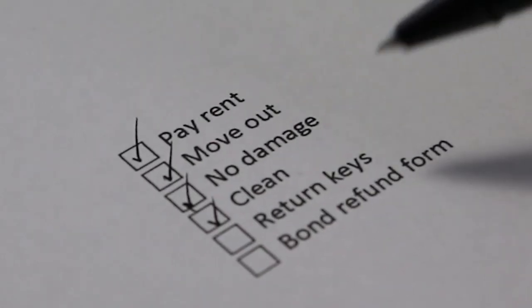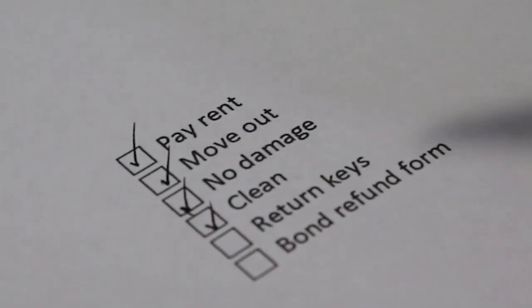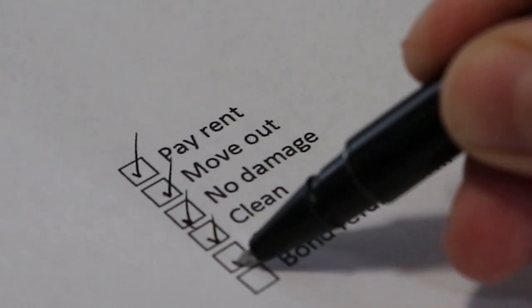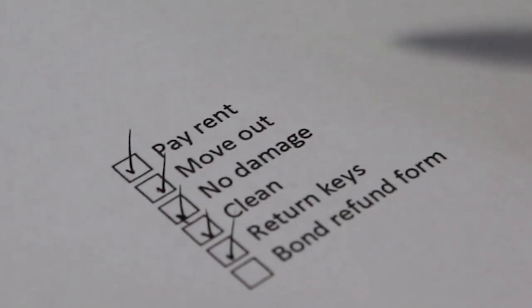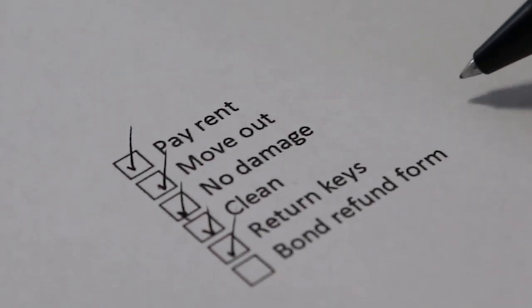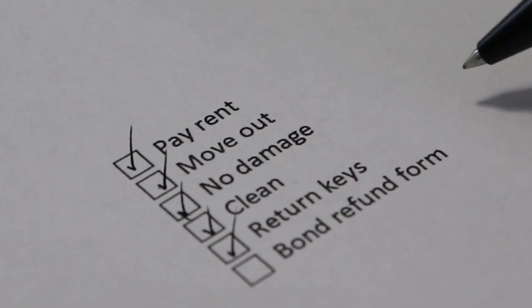Once your lease ends, you can apply to the RTA to get your bond back. If there's no money owed or no damage, you should get all your bond back.